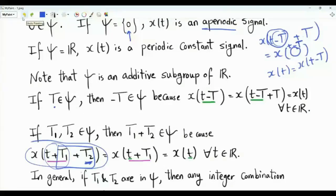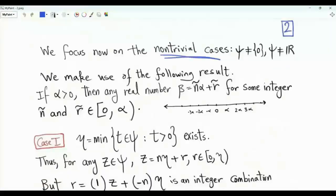We can generalize this conclusion and say that if T1 and T2 are elements of the set psi, then any integer combination of T1 and T2 will also be in psi. We want to focus on the non-trivial cases — we want psi not to be the set of real numbers, but also to contain elements in addition to zero.